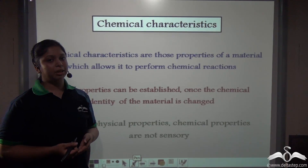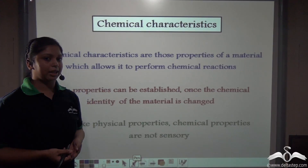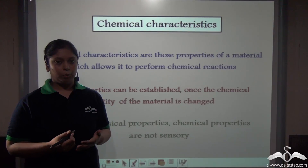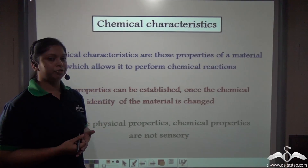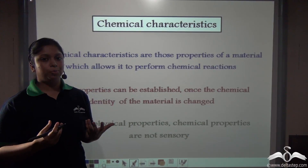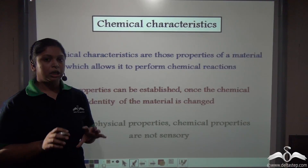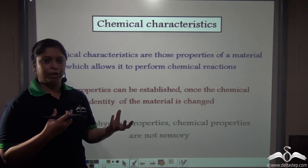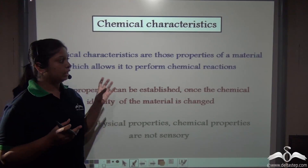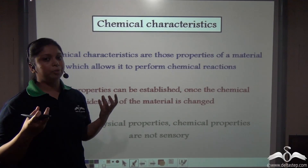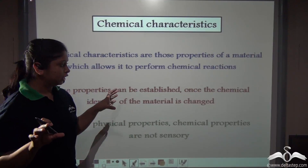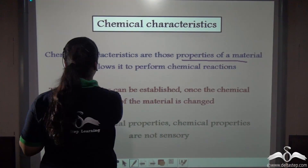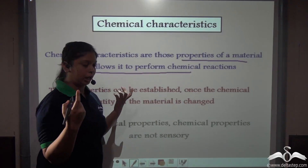Let us study some chemical characteristics of carbon dioxide gas. What are chemical characteristics? These are those properties of a material which allow it to perform chemical reactions. So unlike physical properties, which can be determined by simply viewing or smelling the substance, in chemical properties you need to perform certain reactions. The chemical property of a material allows it to perform a chemical reaction.